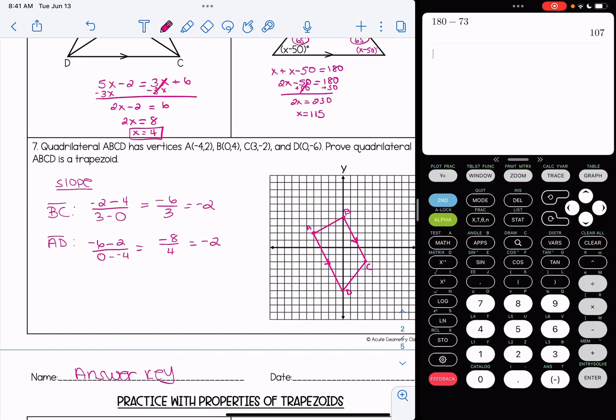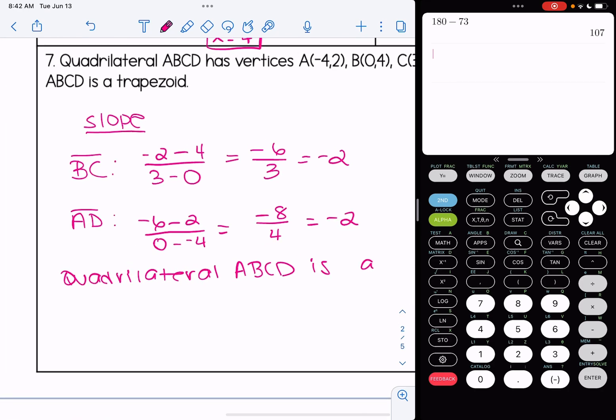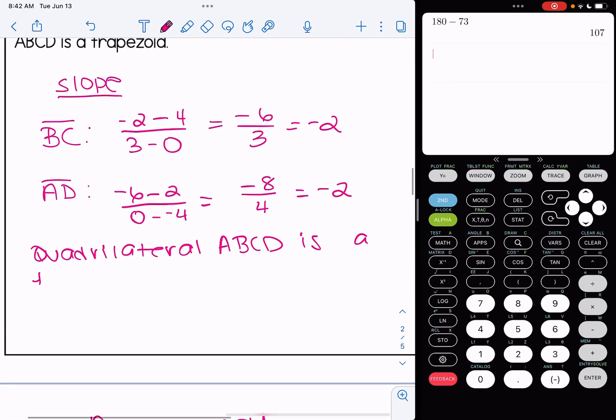So I know that this is a trapezoid because these opposite sides are parallel. And I know they're parallel because their slopes are equal to each other. We have to write that all in a sentence at the end. So I'm going to kind of like restate the question a bit. I'm going to say quadrilateral ABCD is a trapezoid.